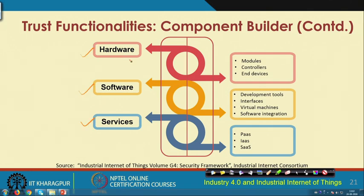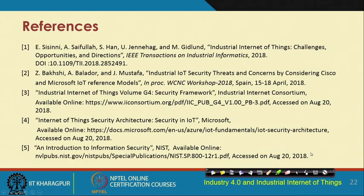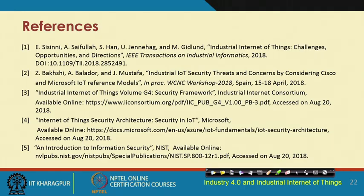At the hardware level, trust issues concern different modules, controllers, and end devices. At the software level, development tools, interfaces, virtual machines, and software integration are of concern. At the services level, different cloud service models — Platform as a Service, Infrastructure as a Service, and Software as a Service — and their corresponding trust functionalities are of prime concern. With this we come to an end of the introduction to security for IIoT.